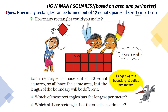Here you can see one rectangle. This rectangle is made up of how many squares? Let's count: 1, 2, 3, 4, 5, 6, 7, 8, 9, 10, 11, 12. So this rectangle is made up of 12 equal squares of size 1 cm into 1 cm.